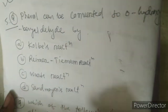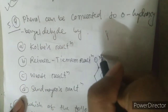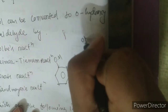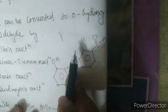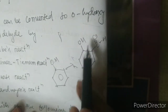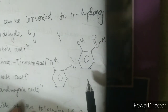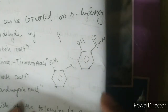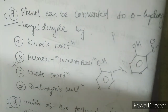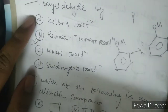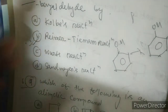Question five: phenol can be converted to o-hydroxybenzaldehyde. Phenol is converted to o-hydroxybenzaldehyde, which is also called salicylaldehyde. This conversion happens in the Reimer-Tiemann reaction. I have already explained this reaction in detail in the chemistry playlist — it's very important. There are other reactions too like Kolbe reaction, Wood's reaction, and Sandmeyer reaction, which I will discuss separately in the reactions section.